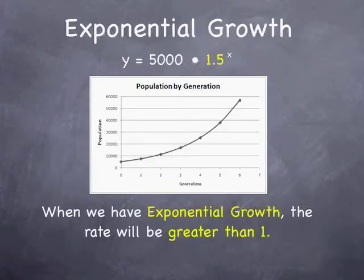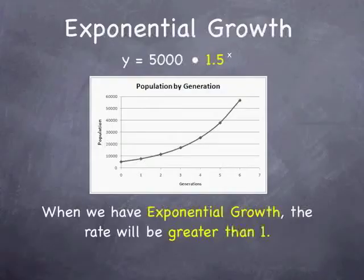Let's look a little bit more closely at exponential growth. Below is a graph of population by generation. As the generations increase, the population increases at an exponential rate. Notice my equation for the graph: 5,000 represents the initial value or the starting value, and 1.5 is the rate. It is very important to remember that when we have exponential growth, the rate will be greater than 1.